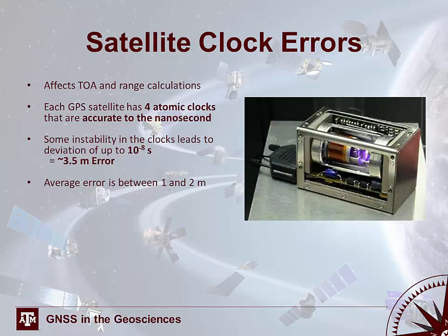There are also satellite clock errors — inaccuracy or imprecision in the satellite clocks themselves — which affect time-of-arrival and range calculations. Each satellite has approximately four atomic clocks accurate to the nanosecond, and this accuracy is constantly improving. Even some instability in the clocks can lead to an error of 3.5 meters: a satellite clock error of 10⁻⁸ seconds equates to about 3.5 meters of error, though the average error from this effect tends to be between 1 to 2 meters.